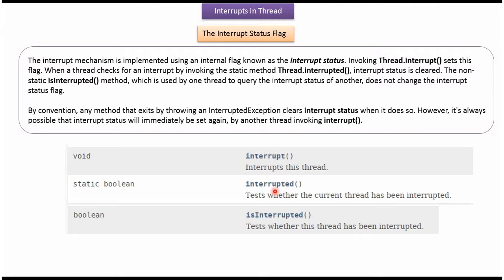Using the interrupted method, we can check whether the currently running thread has been interrupted or not. If it is interrupted, this method returns true, else it will return false. And once this method is called, the flag interrupt status will be cleared.